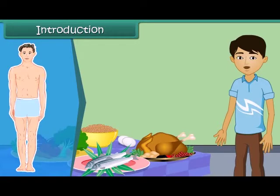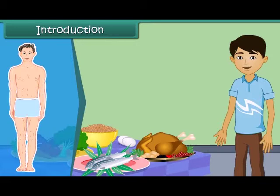We get our food from both plants and animals. Food has to be produced on a large scale to meet everyone's requirements. In this module, we will discuss crop production and its management for the distribution of food.